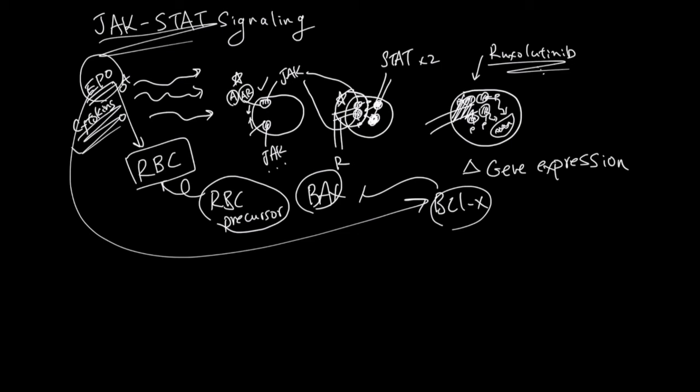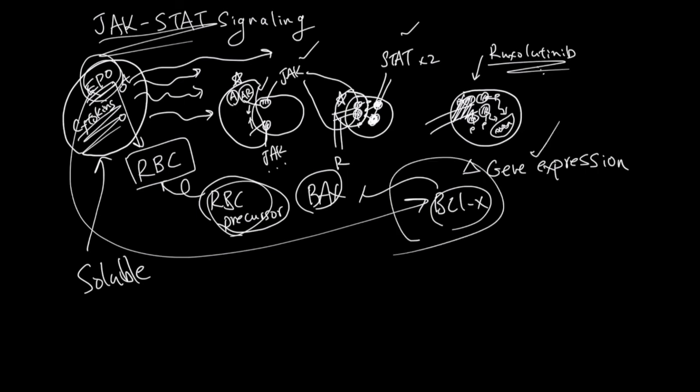In summary, the JAK-STAT signaling uses ligands. There are many JAK-STAT ligands. And these ligands are water-soluble, can travel to many parts of the body, be in contact with many cells, but only specific cells have the receptor. For EPO, RBC precursor has that receptor. When the ligand binds to a specific receptor, JAK gets activated, STAT gets activated, and then the gene expression changes to produce specific proteins.